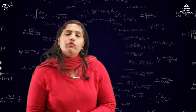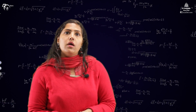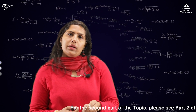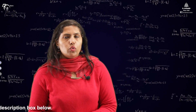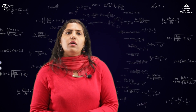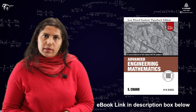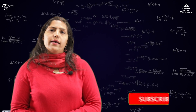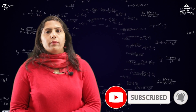This concludes Part 1, where we covered the definition of linear independence and dependence of vectors with two examples. In Part 2, we will cover different problems with vectors in various dimensions. If you want to study this topic in detail, please refer to the book by S.Chand Publishing — the e-book link is in the description below. If you like the video, please like, share, and subscribe to S.Chand Academy, and press the bell icon for future updates.